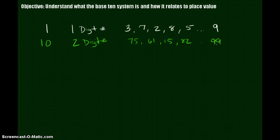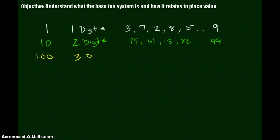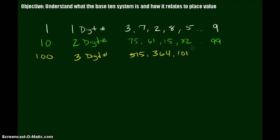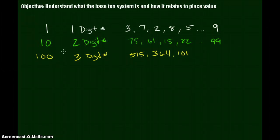So if our biggest two-digit number is 99, our smallest three-digit number is going to be 100, because the next number right after 99 is 100. There are a lot of three-digit numbers — for example, 515, 364, and 101. These all have three individual digits. We say 'digits' rather than 'numbers' to avoid confusion — each individual one is called a digit. The biggest three-digit number is 999.